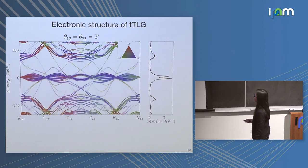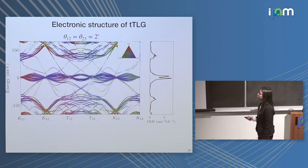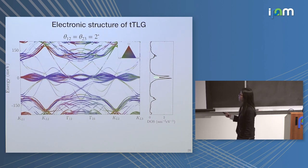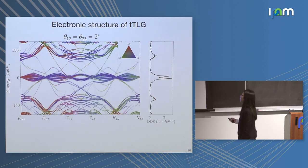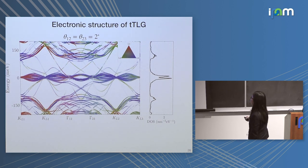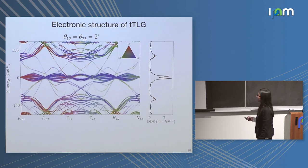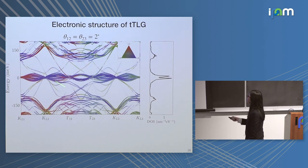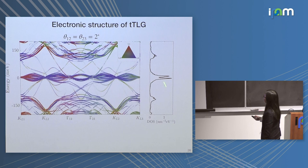We can calculate what the density of states looks like. You see some peaks near the charge neutrality points — those are the high density of states peaks from these flat bands — and some other side peaks.